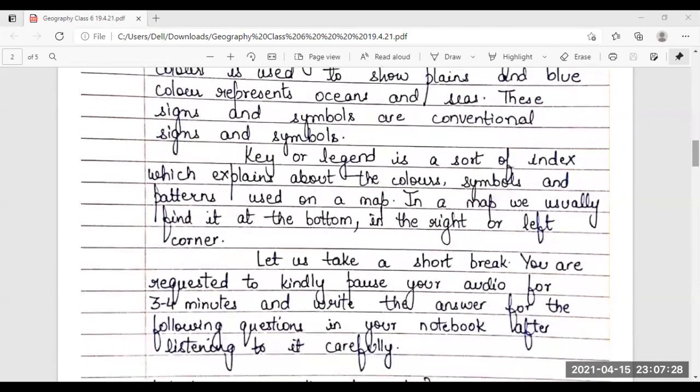Key or legend is a sort of index which explains about the colors, symbols and patterns used on a map. In a map, we usually find it at the bottom, in the right or the left corner.